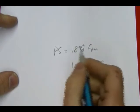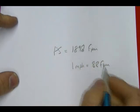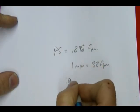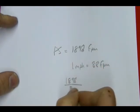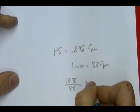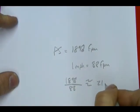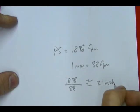So to convert this to miles per hour, I just divide by 88. So 1,898 divided by 88 is approximately equal to 21 miles per hour.